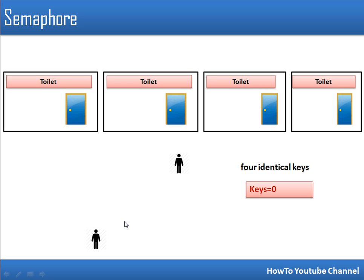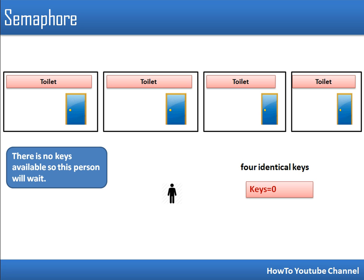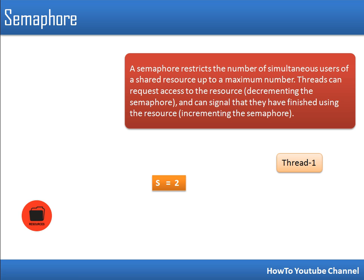This variable specifies how many keys are available. When no keys are available and another person tries to access a toilet, they will have to wait because there are no keys left. This variable is used to determine whether there will be waiting or access to the facility. In semaphore, if there is no key this person has to wait. Semaphore is used to specify how many simultaneous accesses can be allowed, and there is no ownership relationship — it is a signaling mechanism.